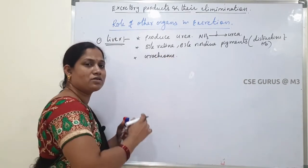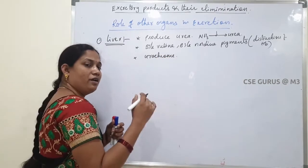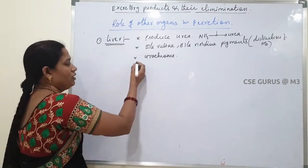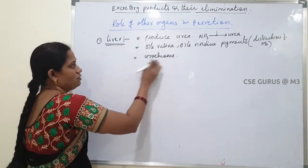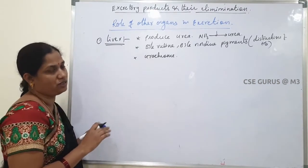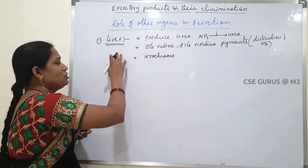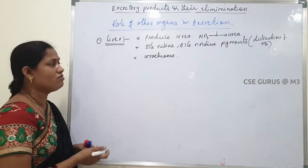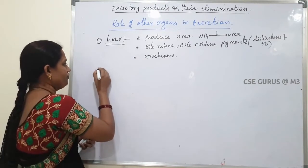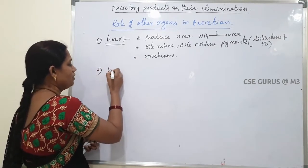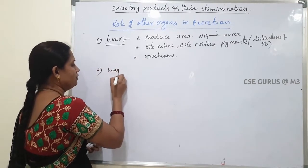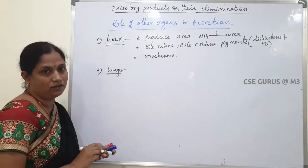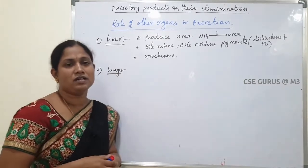Urochrome is also eliminated by the liver in the form of urine. So these are the main excretory functions of the liver, which is why the liver also acts as an excretory organ.